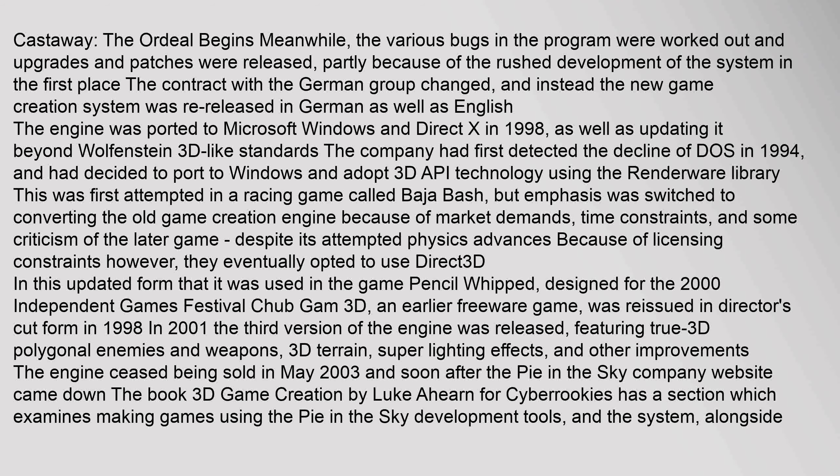Because of licensing constraints, they eventually opted to use Direct3D. In this updated form, the engine was used in the game Pencil Whipped, designed for the 2000 Independent Games Festival. Chub Gam 3D, an earlier freeware game, was reissued in Director's Cut form in 1998. In 2001, the third version of the engine was released, featuring true 3D polygonal enemies and weapons, 3D terrain, super lighting effects, and other improvements. The engine ceased being sold in May 2003, and soon after the Pi in the Sky company website came down.